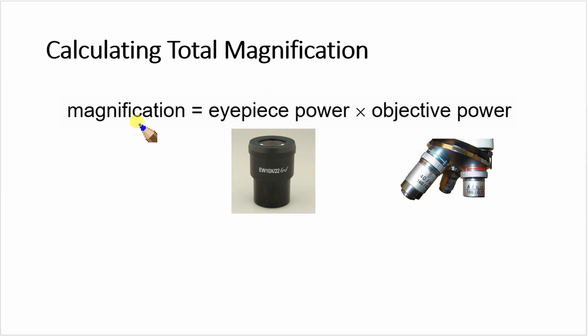Here's the formula: to work out the total magnification, you need to find the magnification of the eyepiece lens and the magnification of the objective lens.